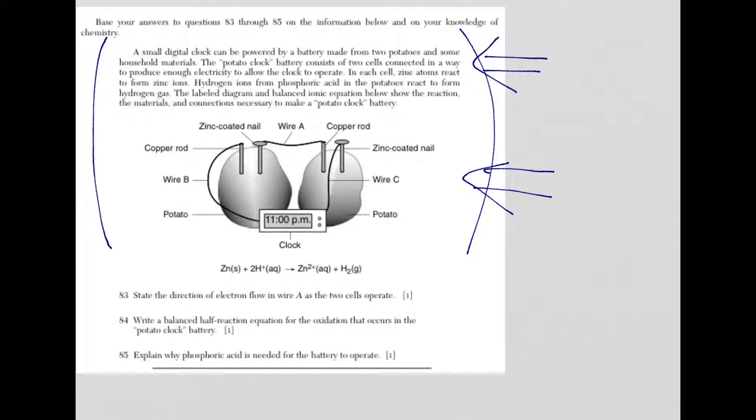When I look at question 83, it says state the direction of an electron flow from wire A as the two cells operate. Well, I have a copper rod, and I have a zinc rod. And if I go back and take a look at the reading passage, it tells me that the zinc atoms react to form zinc ions. So here, I have zinc atoms becoming zinc ions.